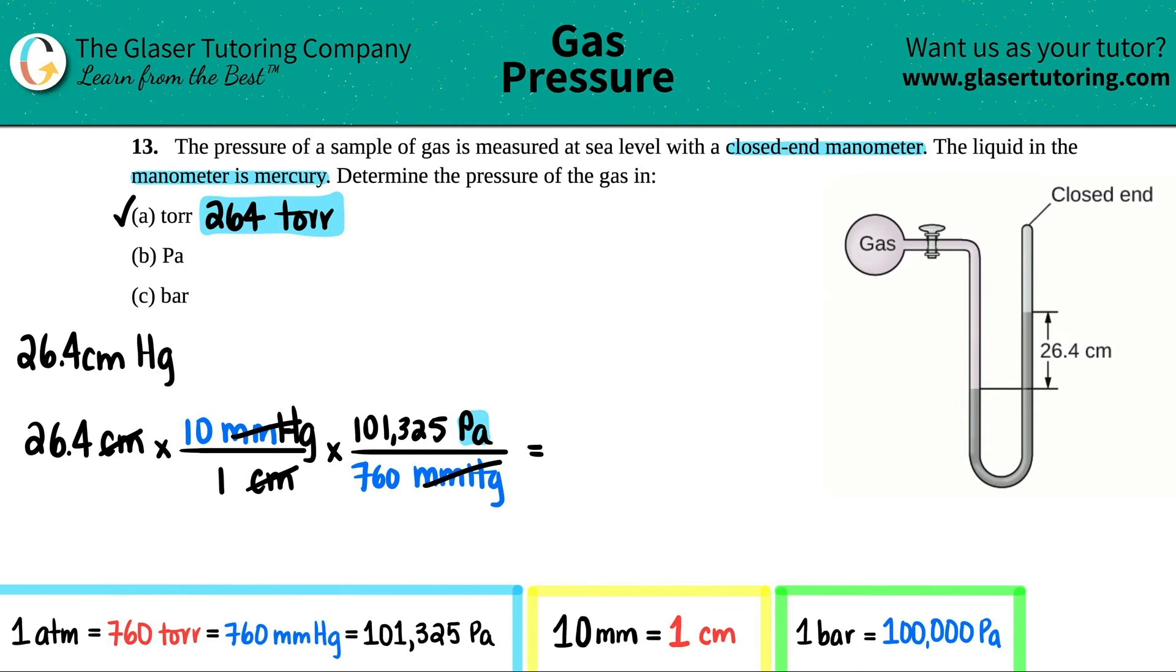Now I have just pascal so I'm ready to calculate. 26.4 times 10 times 101,325 divided by 760. Three sig figs because that's what we started with. Remember, conversion factors have nothing to do with significant figures. This would be 3.52 times 10 to the fourth pascal, and the second one is done.